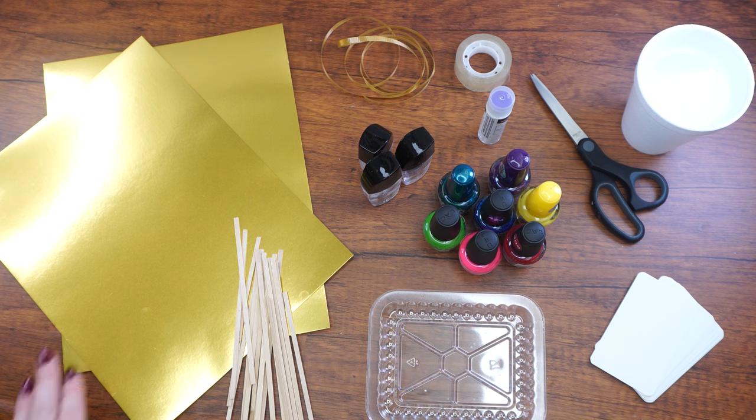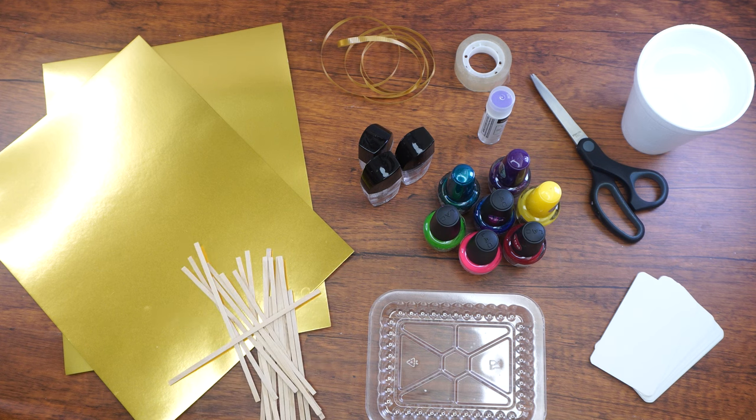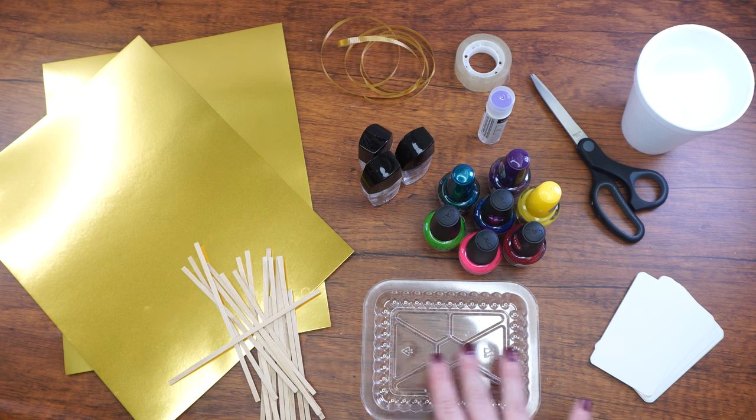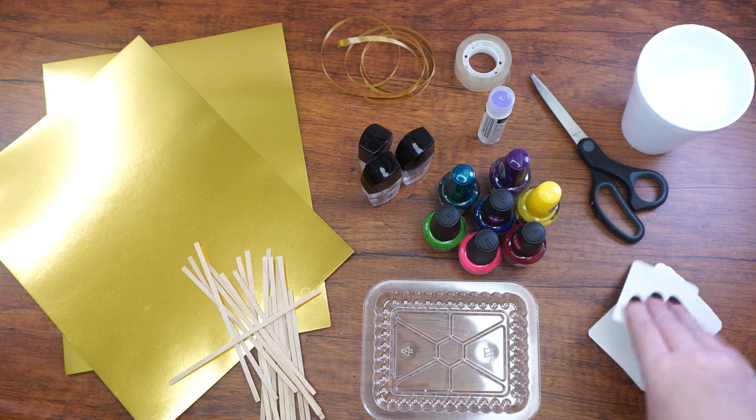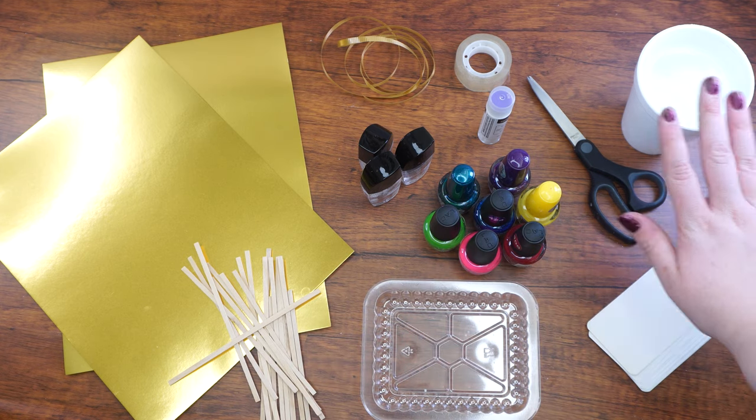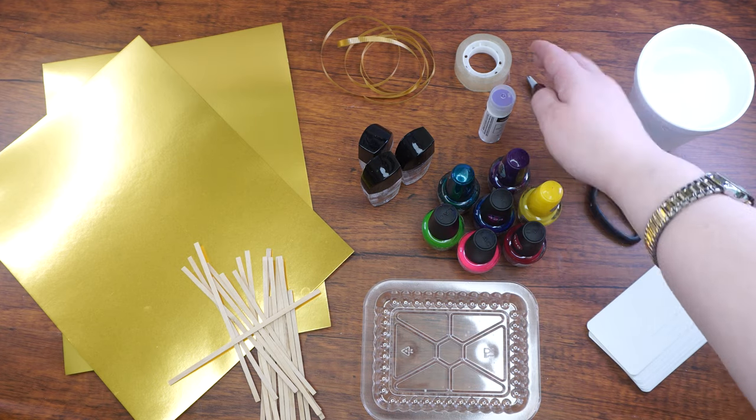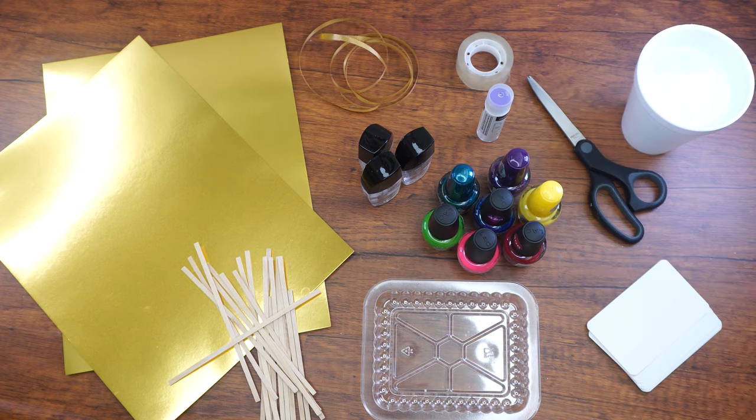Here are the supplies that we will need. Gold cardstock, wooden mixing sticks, small plastic tray covers, six cardstock cards, here we used ones that are three by one and a half inches, scissors, water, seven colors of nail polish, clear nail polish, a glue stick, tape, and a piece of ribbon or string.